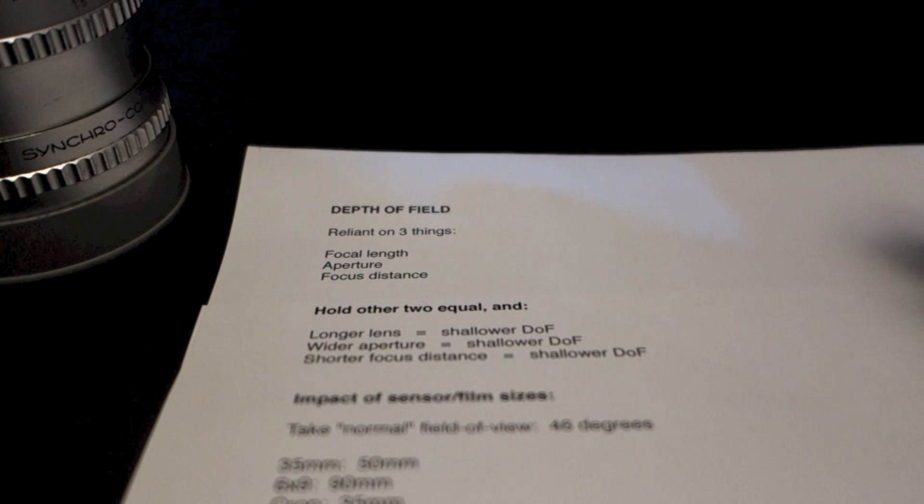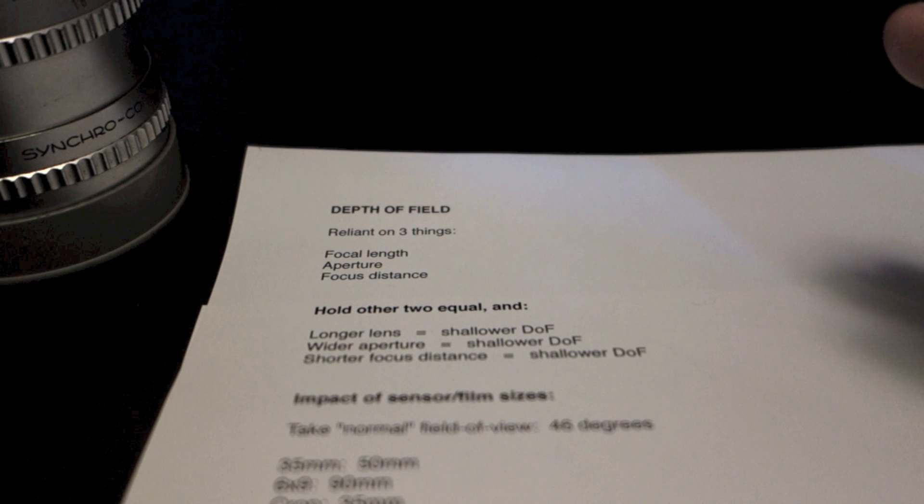A shorter focus distance gives you shallower depth of field with the other two items held constant. So the flip side of that is true, too. So if you want deeper depth of field, meaning more things in focus from front to back, you'll get more of that with a shorter lens, or a smaller aperture, meaning a larger f number, or a longer focus distance.